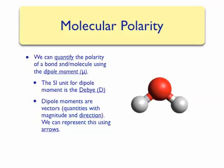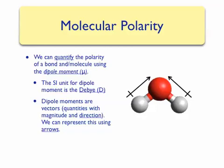We often represent vector quantities using arrows. We can illustrate this by looking at the water molecule. Usually, we represent dipole moment arrows pointing towards the more electronegative atom. Note that the arrow points towards oxygen, since it's more electronegative than hydrogen. Dipole moment arrows often have a little plus sign on the tail, on the side with the less electronegative atom — in this case hydrogen. We can draw two dipole moment arrows, one for each oxygen-hydrogen bond, and both arrows will point towards oxygen.